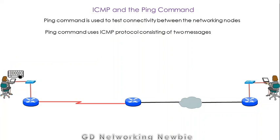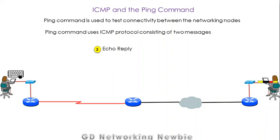Once that node has received that packet, it is supposed to send a reply back — that's called an echo reply. In this reply, the echo reply will say that yes, 139.130.4.5 is my IP address, and here is the reply. This reply will also be sent in the form of a packet. After proper encapsulation, this will be received at the sending node, and in this way, that node can check the connectivity of the other node.